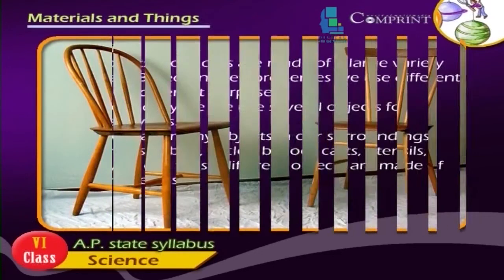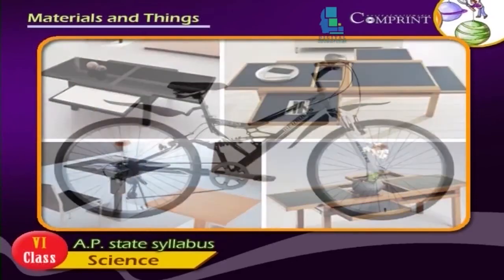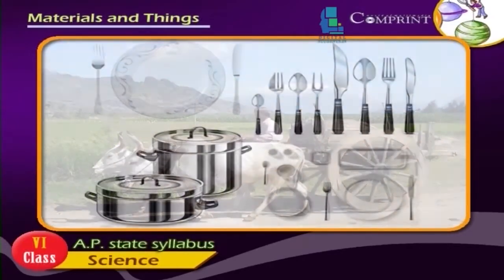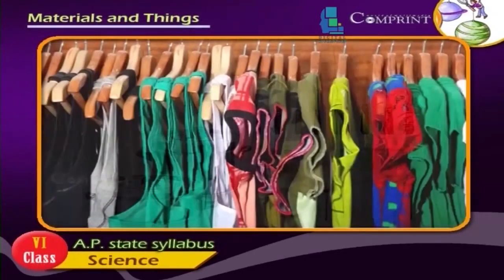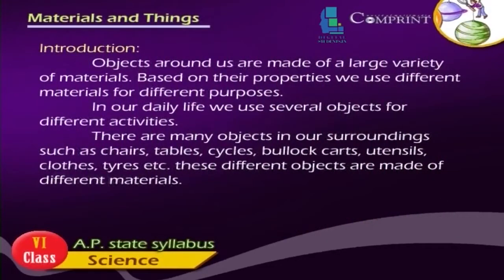Such as chairs, tables, cycles, cots, utensils, clothes, tires, etc. These different objects are made of different materials.